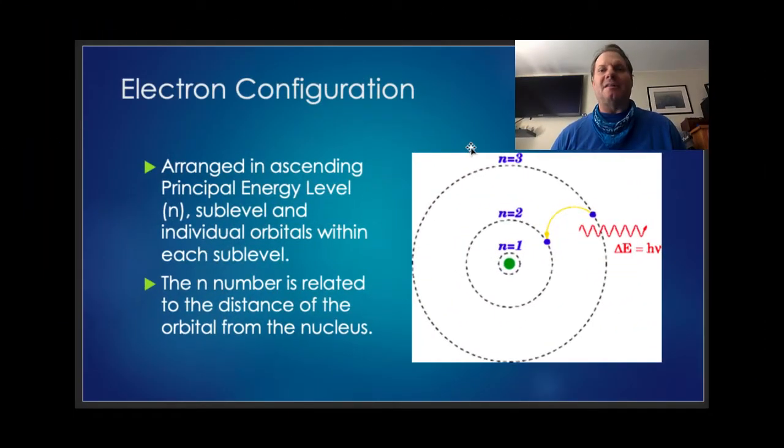Hi and welcome to video 2.2 where we're going to be talking about electron configurations. So what does the word configuration mean? It's kind of the arrangement of. So we're going to be looking at how the electrons are arranged around the atom, much more specifically than they were looking at in the Bohr model.